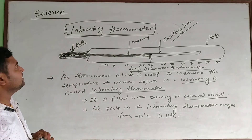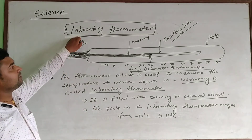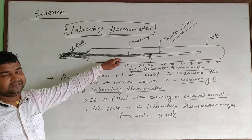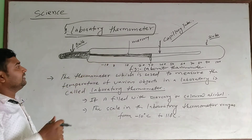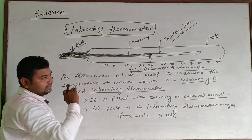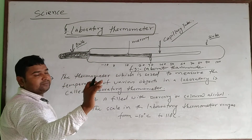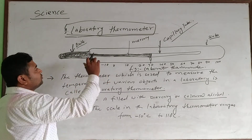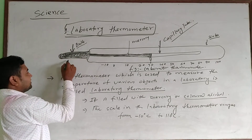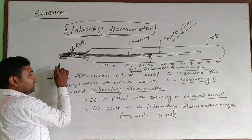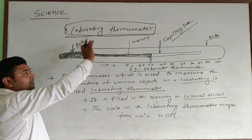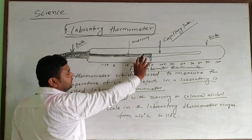In the laboratory thermometer, the capillary tube is straight — it is only in one straight state. So when it comes into contact with an outer body, the mercury level rises easily.